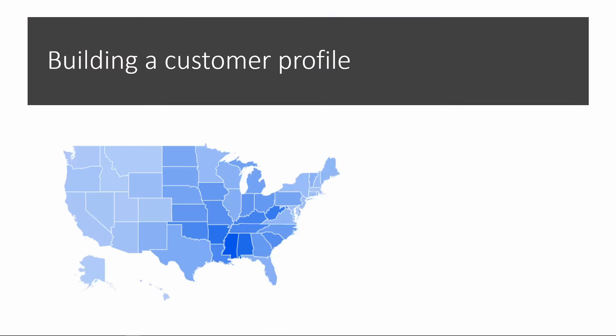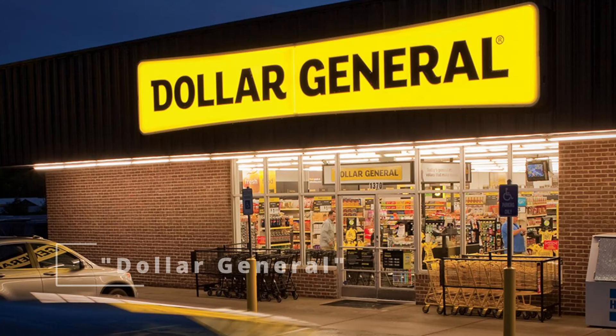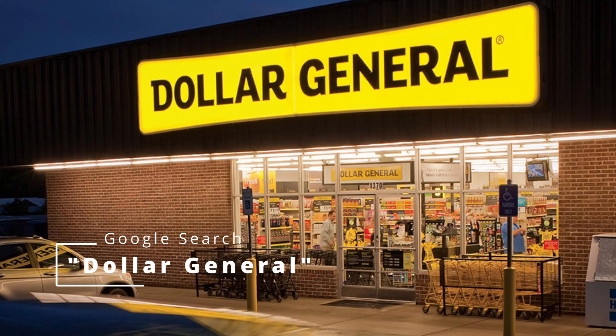First, let me show you a map. This is a state-level map of the United States. The country has been colored in different shades of blue — some states have darker blue colors and some states have lighter blue colors. The darker blue color represents a higher intensity of Google search. In this case, the map represents the search intensity for Dollar General, the discount retail store.